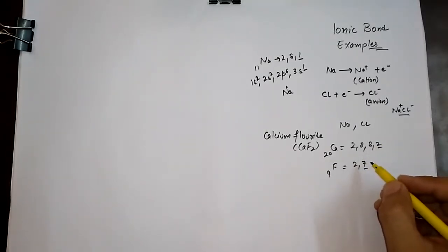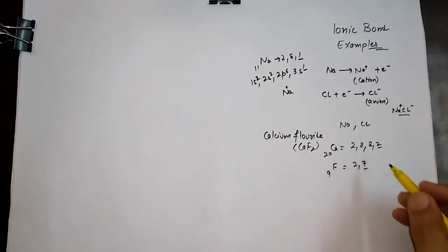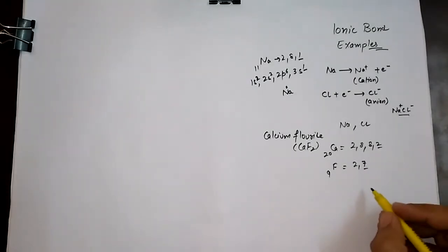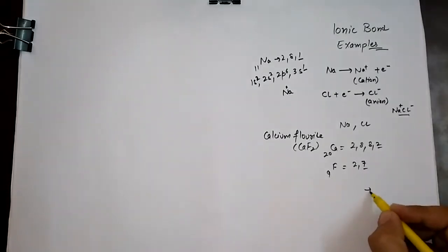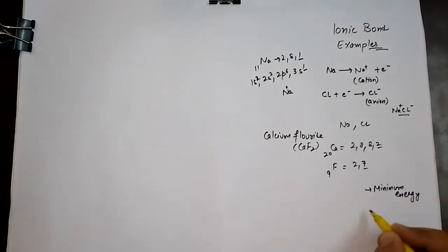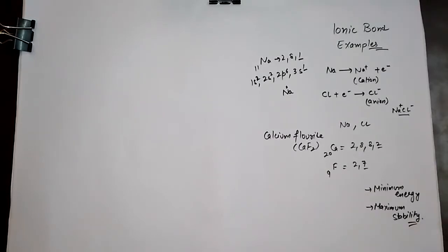Both atoms want to achieve stability — maximum stability and minimum energy. If a teacher asks why bonds form, the simple answer is: atoms want to achieve minimum energy and maximum stability. If they achieve these two factors, there is no reason for the bond not to form.